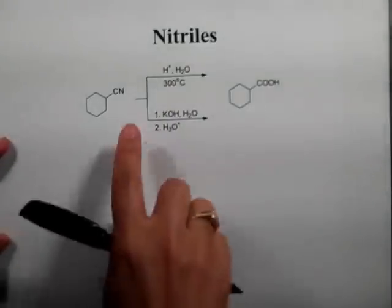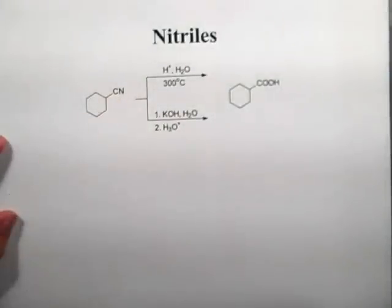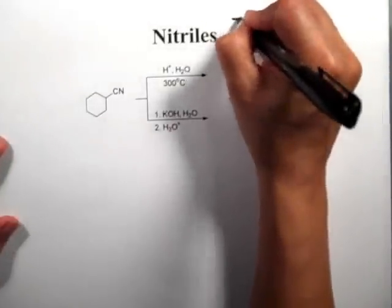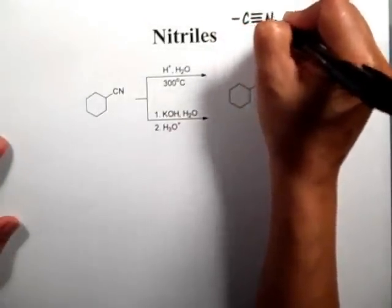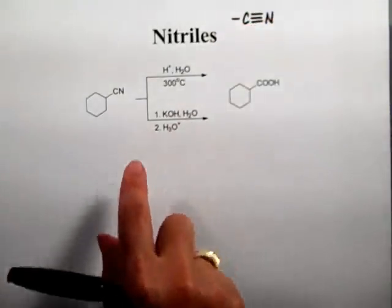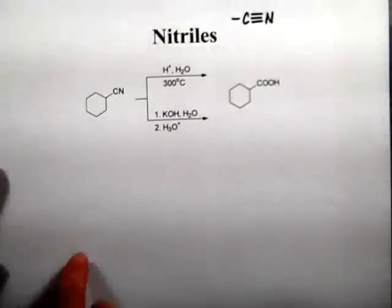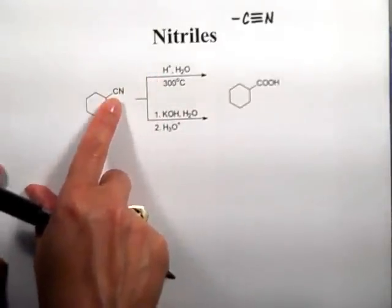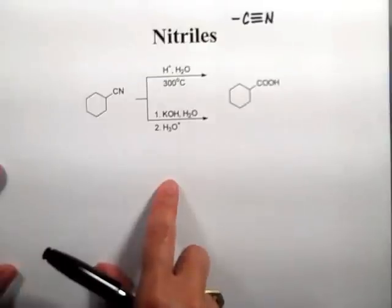These are what we call cyanides. The cyano group has a triple bond between the carbon and the nitrogen. This is the first reaction I showed you a long time ago — we can hydrolyze the nitrile all the way to the carboxylic acid.